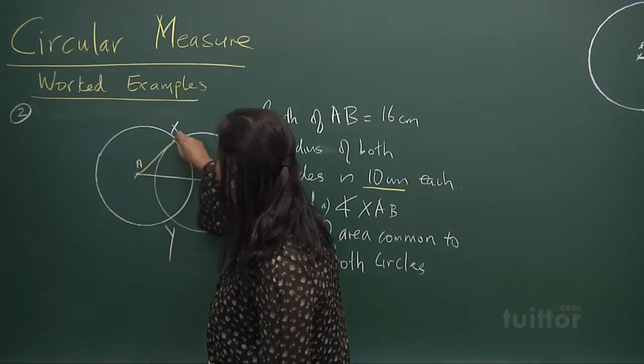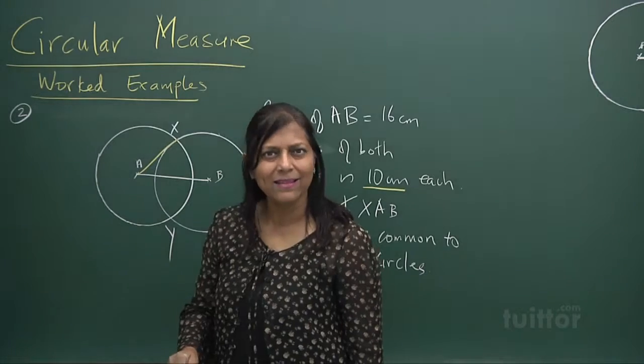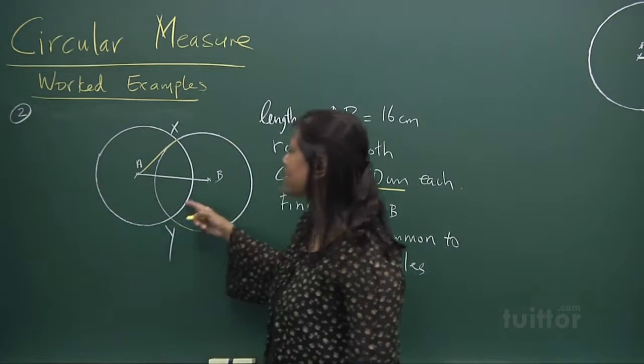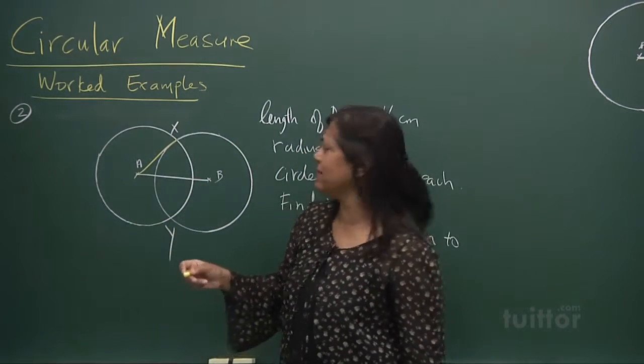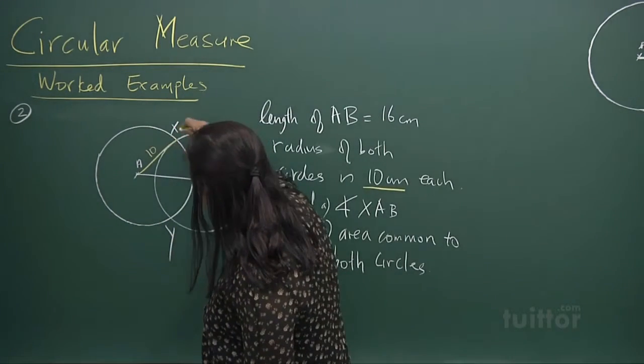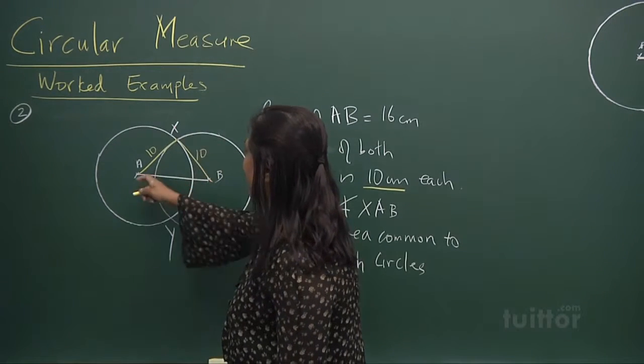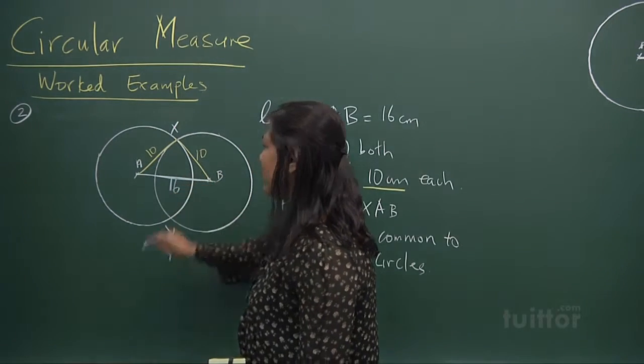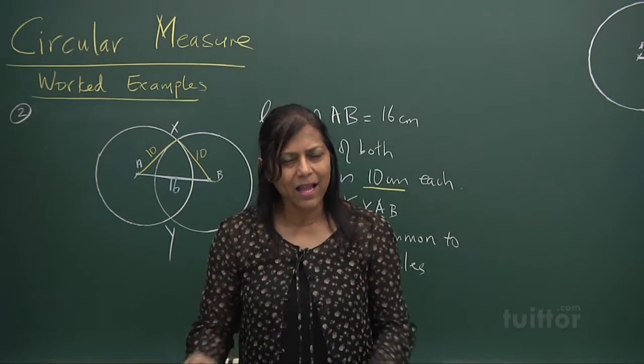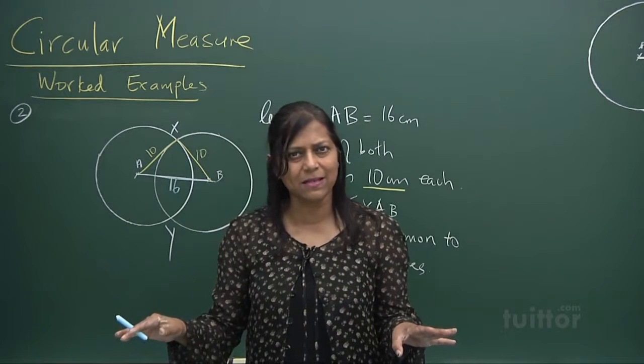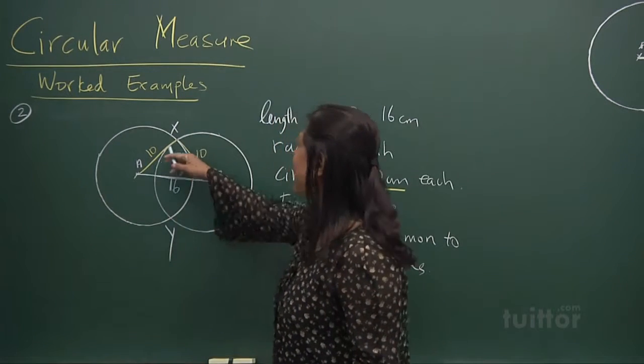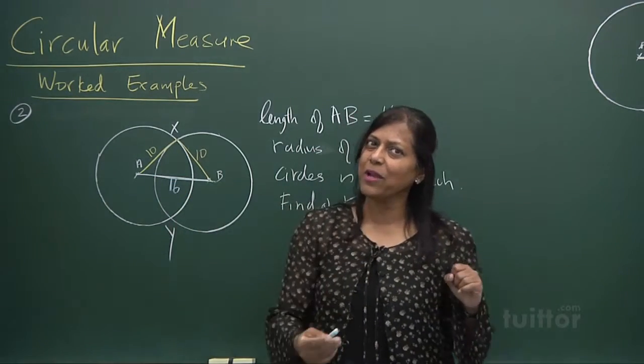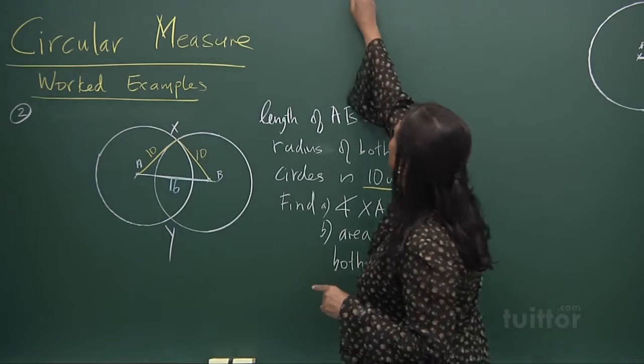Now what they say? This length is 16 and the radius is 10. If I join x to A, what's the length? 10. Isn't it a radius from the center to any point of the circle? That's called the radius. So that's 10. And from here to here, that's 10. And what is the length from here to here? 16. I see so many properties in it. I can find this angle. I can use cosine rule.